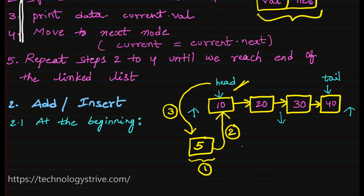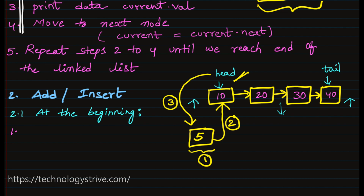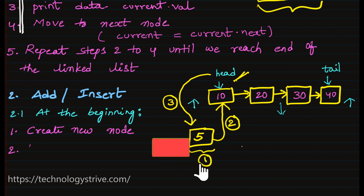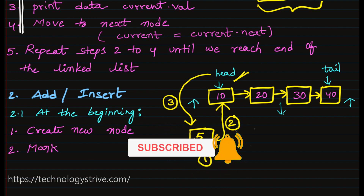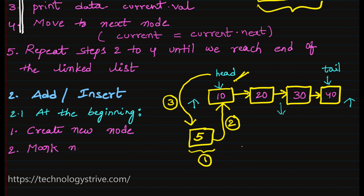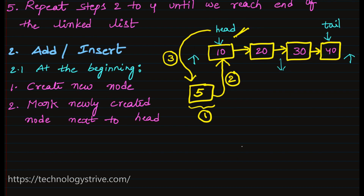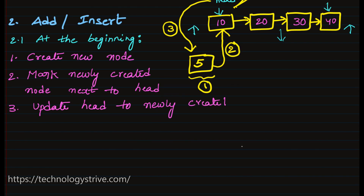So the steps to add a node at the beginning are: Step 1 — create new node with given value. Step 2 — mark newly created node's next to the current head, since we are adding at the beginning. Step 3 — update head to the newly created node. This is how we add a node at the beginning. Next we will write the algorithm to add at the end.